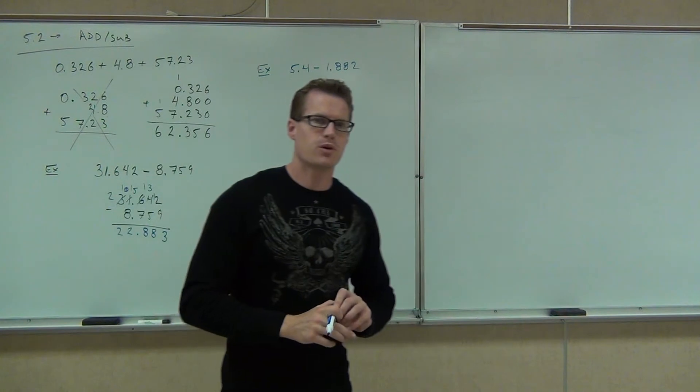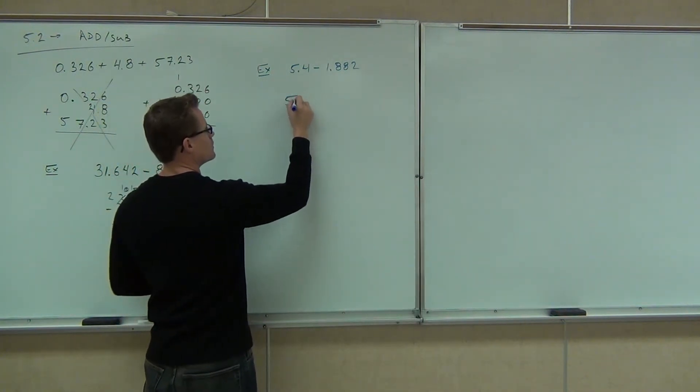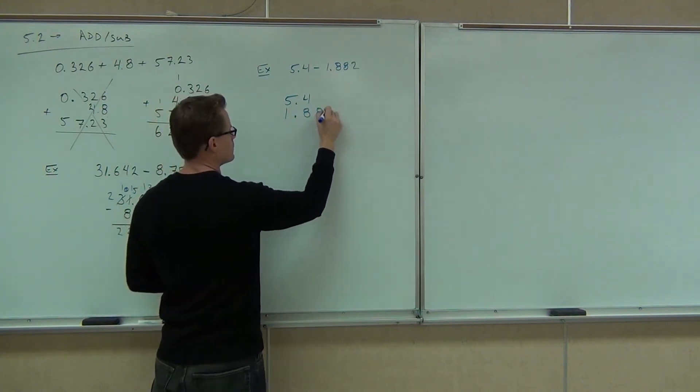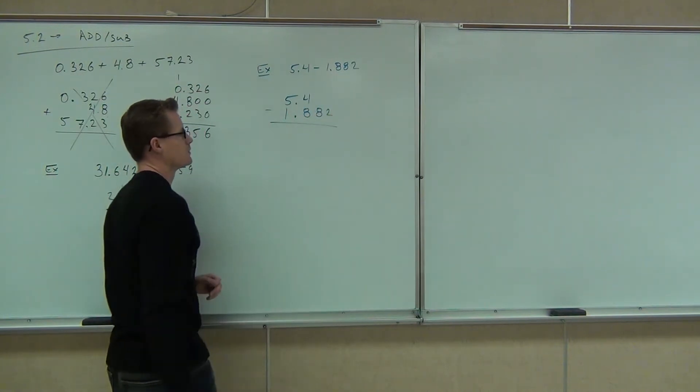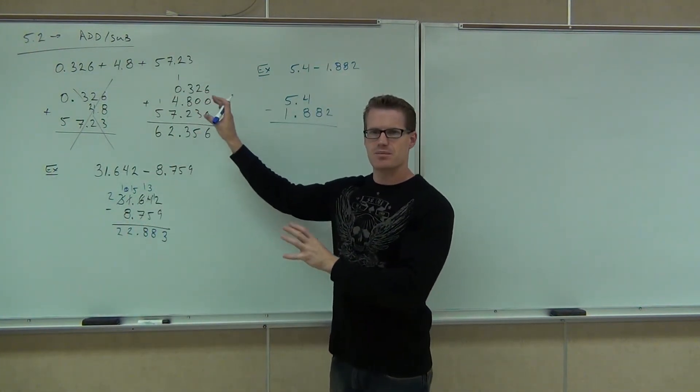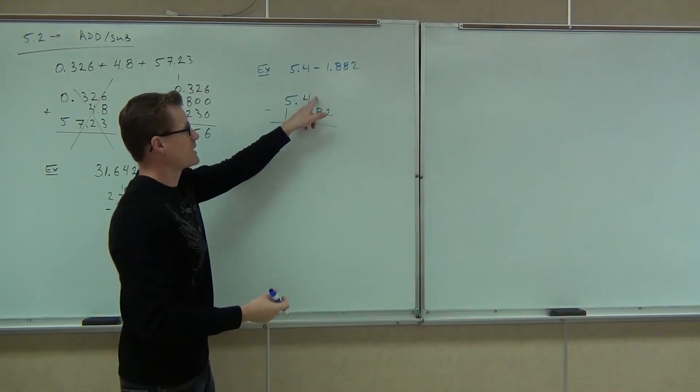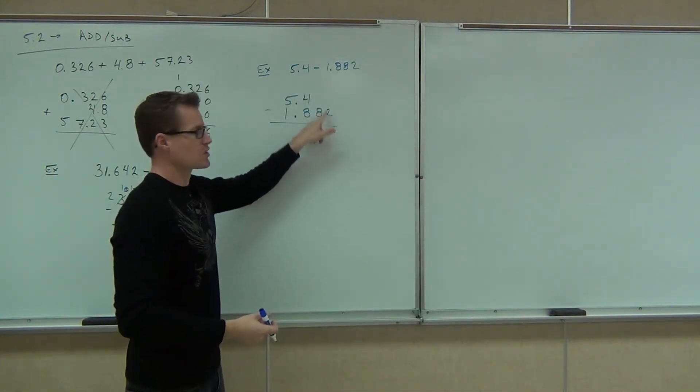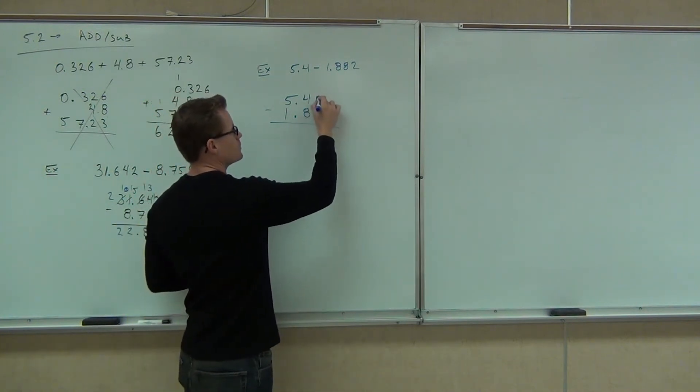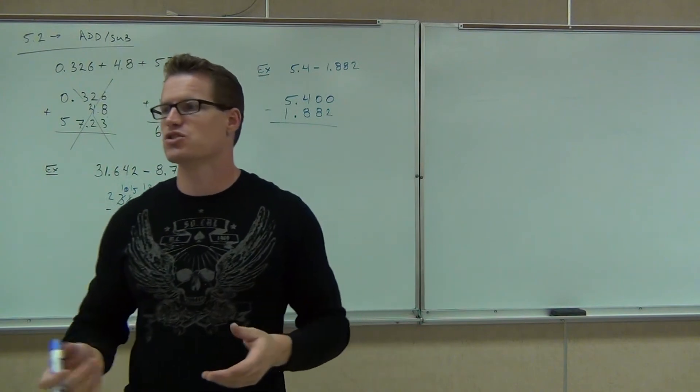What would you do if you had 5.4 minus 1.882? Put two zeros next to the 4. Now, in the case of subtraction, addition really didn't matter if we had zeros, right? Because they didn't have any value for those places. However, if you're subtracting, you can't get a 2 here, you're taking 0 minus 2. You do have to put those zeros on there because they matter in this case. You're subtracting now.